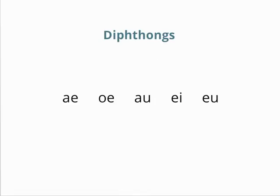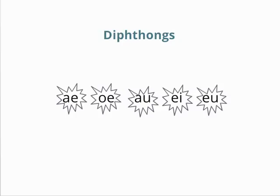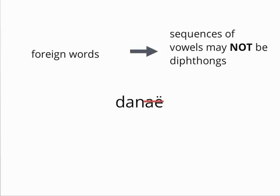The Latin diphthongs are ai, oi, au, ai, au. Note that when you are dealing with foreign words like Greek ones in Latin, those sequences of vowels may not actually be diphthongs.